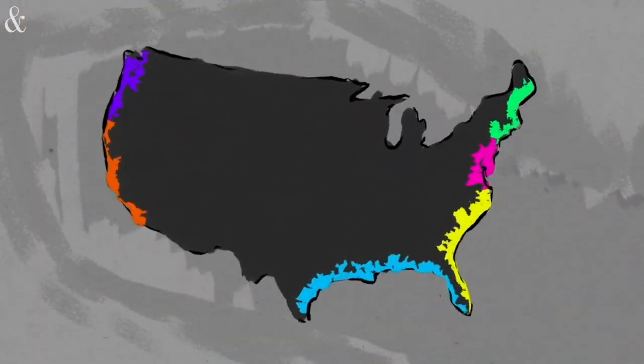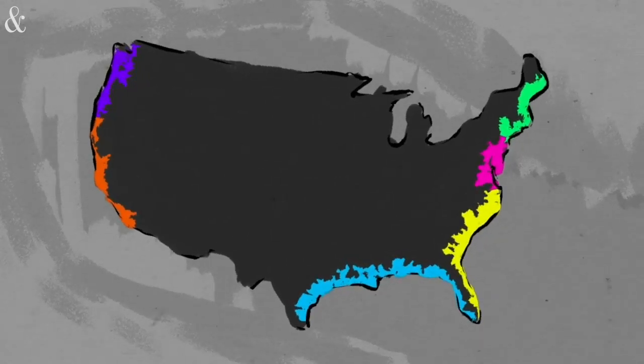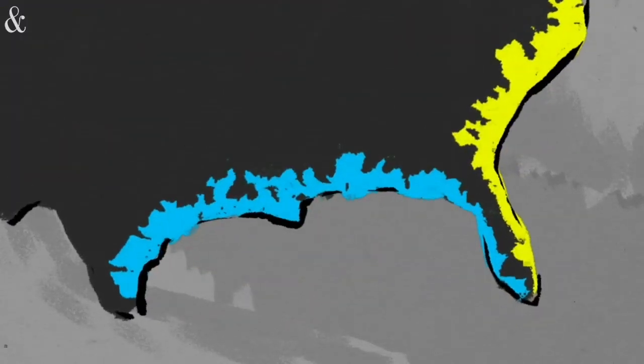Salt marshes occur worldwide, particularly in the middle to high latitudes, and are found on every coast in the United States. The majority of them are located along the Gulf and South Atlantic coast.